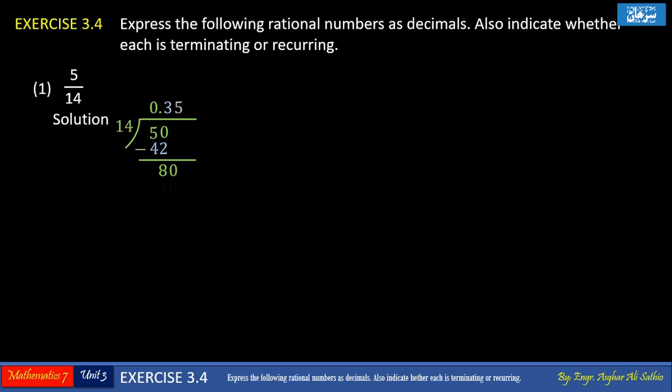14 cannot divide 8, so we put 0 on the right of 8 making it 80. 14 multiplied by 5 gives 70; subtracting 70 from 80 gives 10. 14 cannot divide 10, so we put 0 on the right making it 100. 14 multiplied by 7 gives 98; subtracting 98 from 100 gives 2.